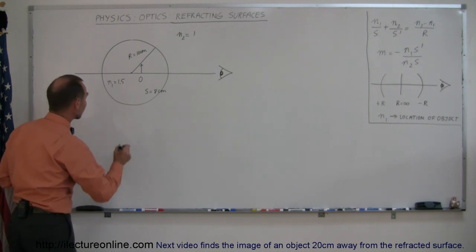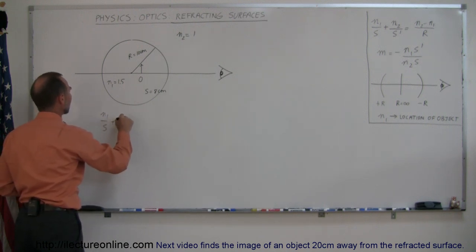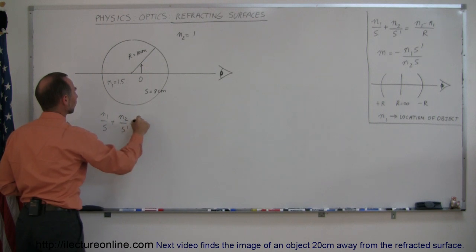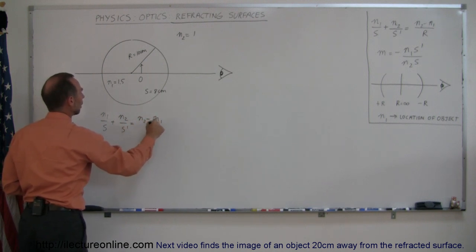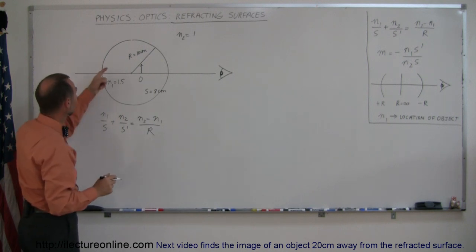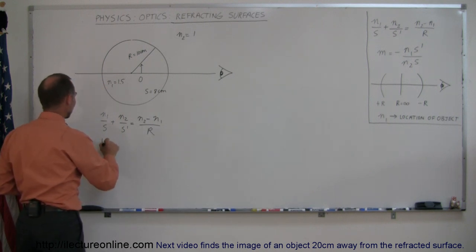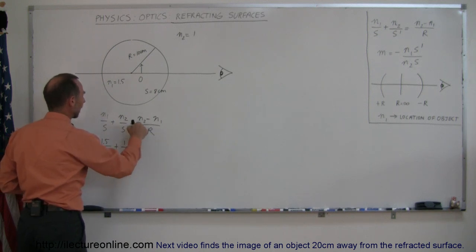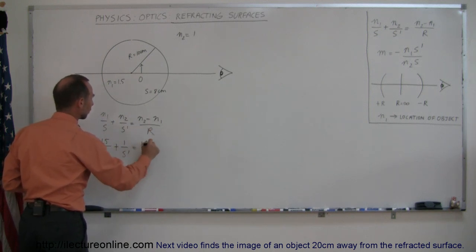Let's take our equation, n1 over s plus n2 over s prime equals n2 minus n1 over r. Plug in the numbers, n1 is 1.5, so we have 1.5 over 8 for s plus 1 over s prime equals n2, which is 1, minus n1, which is 1.5, divided by r.